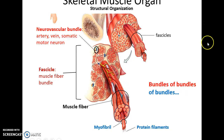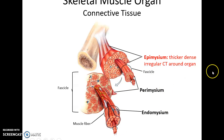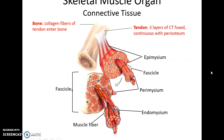Also found within the muscle organ is a neurovascular bundle with blood vessels and somatic motor neurons. There are layers of connective tissue around the various layers of the muscle organ: epimysium, a thick dense irregular connective tissue structure surrounding the entire organ; perimysium, dense irregular connective tissue surrounding the fascicles; and then the endomysium, the connective tissue surrounding the individual muscle fibers.